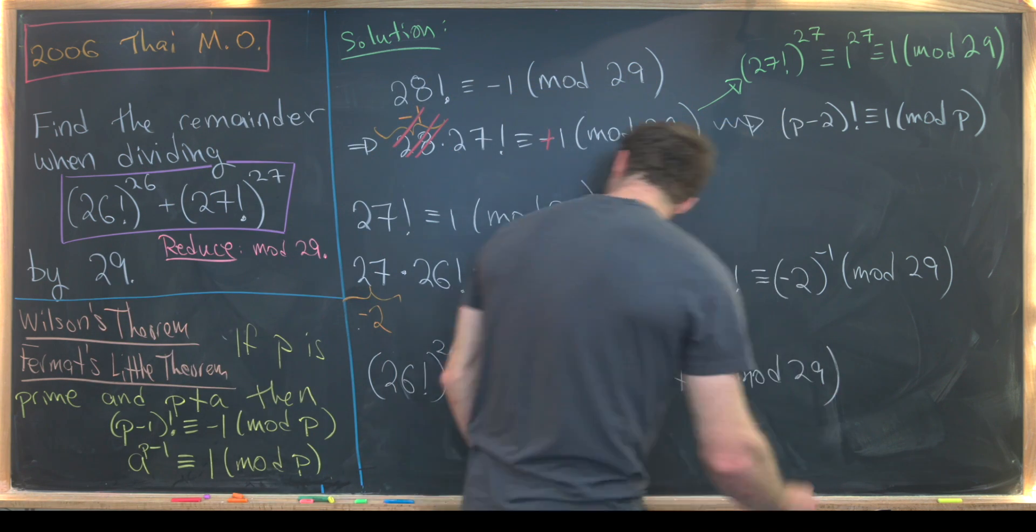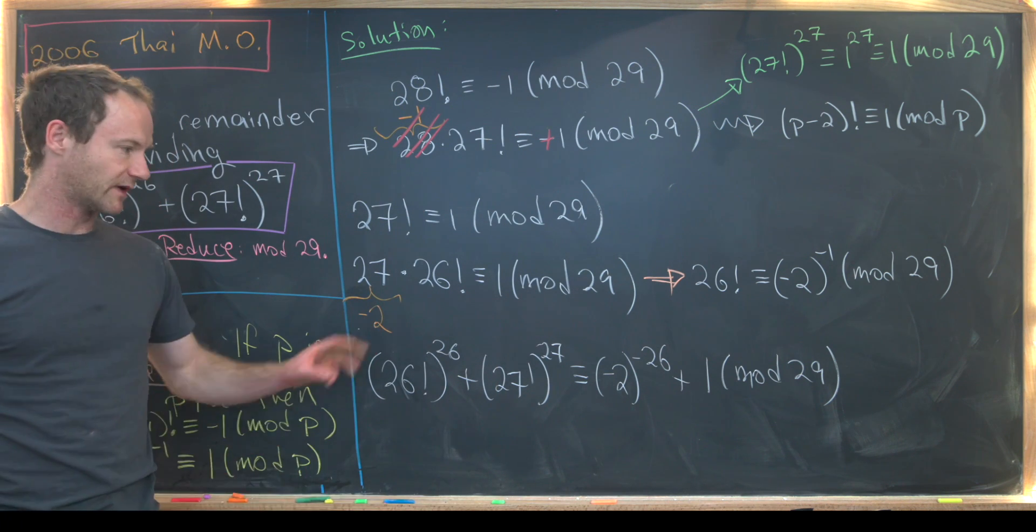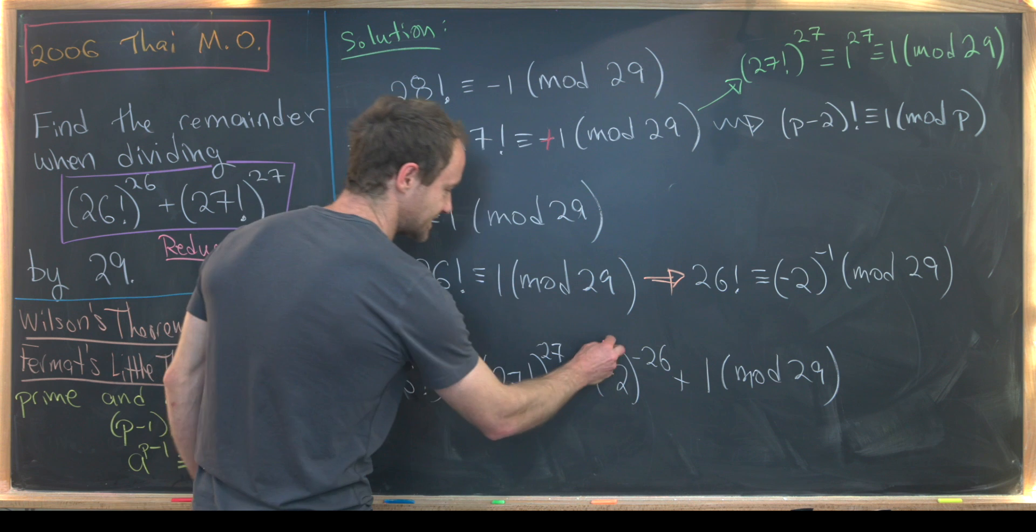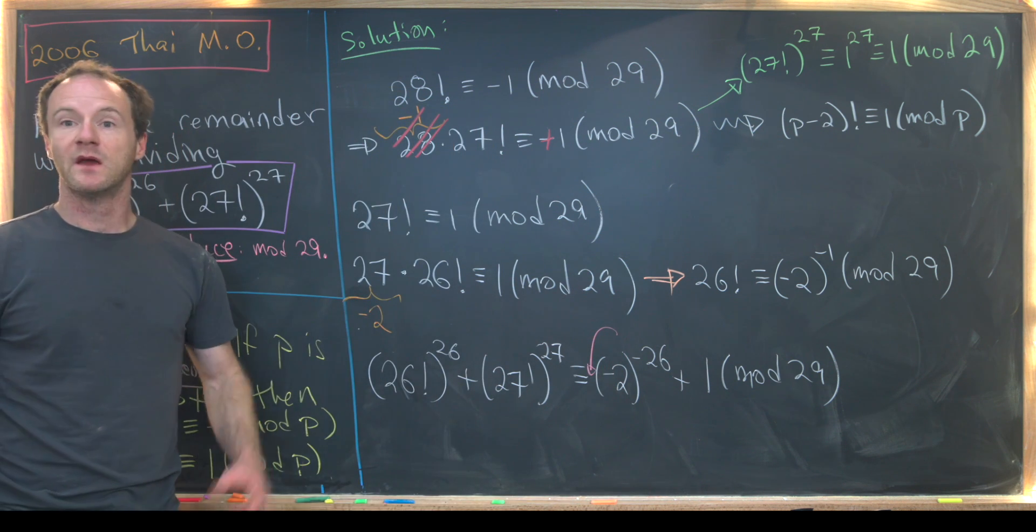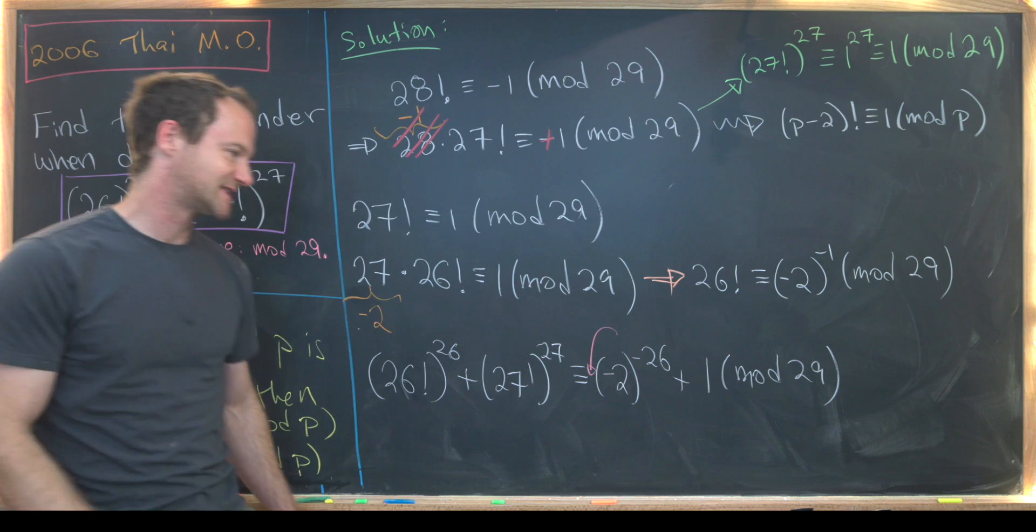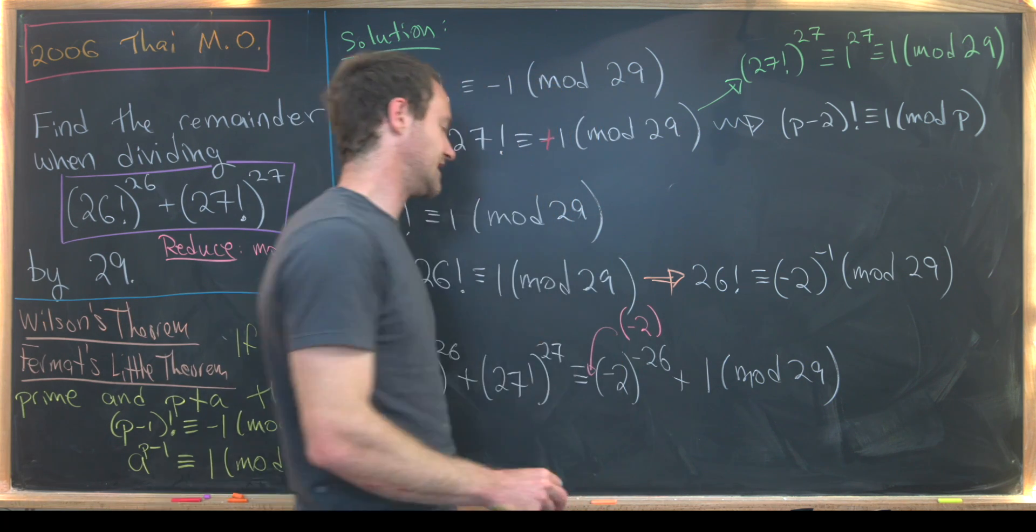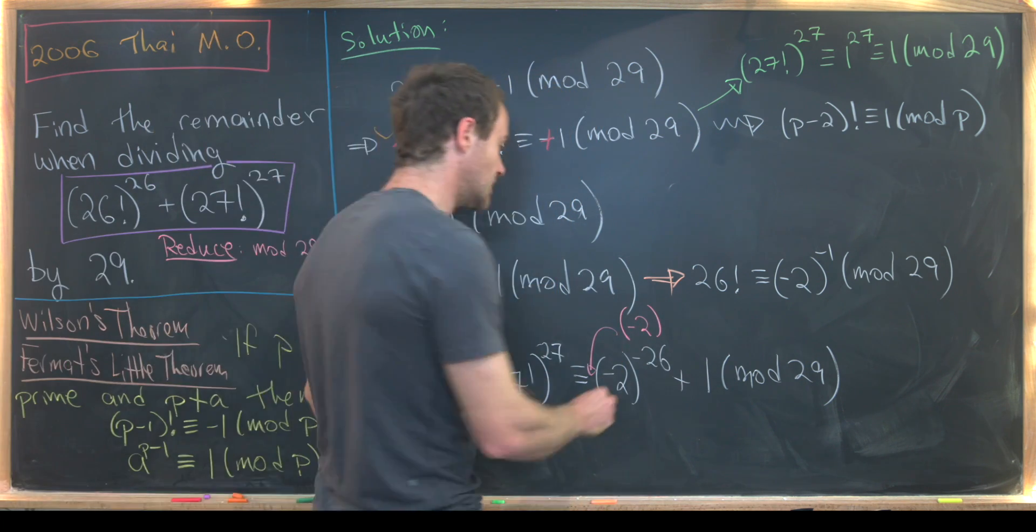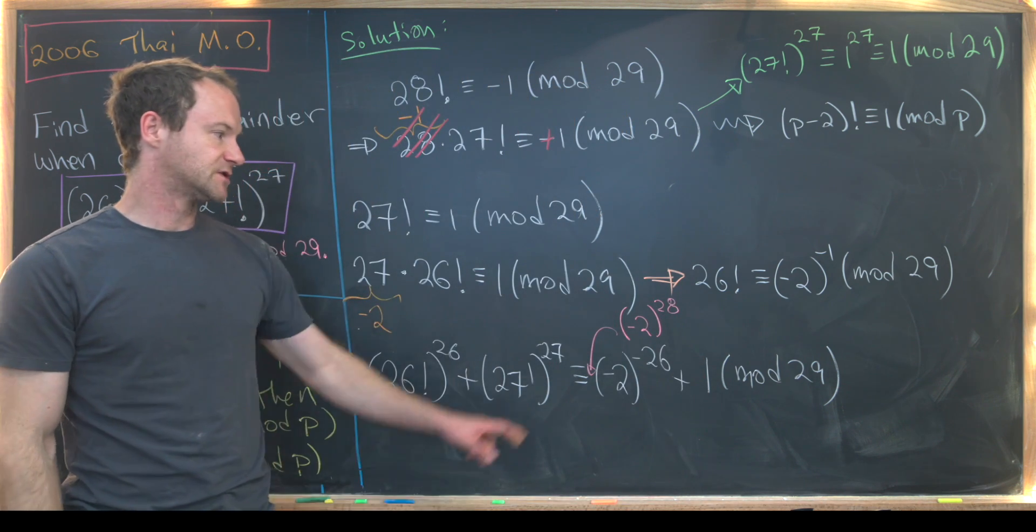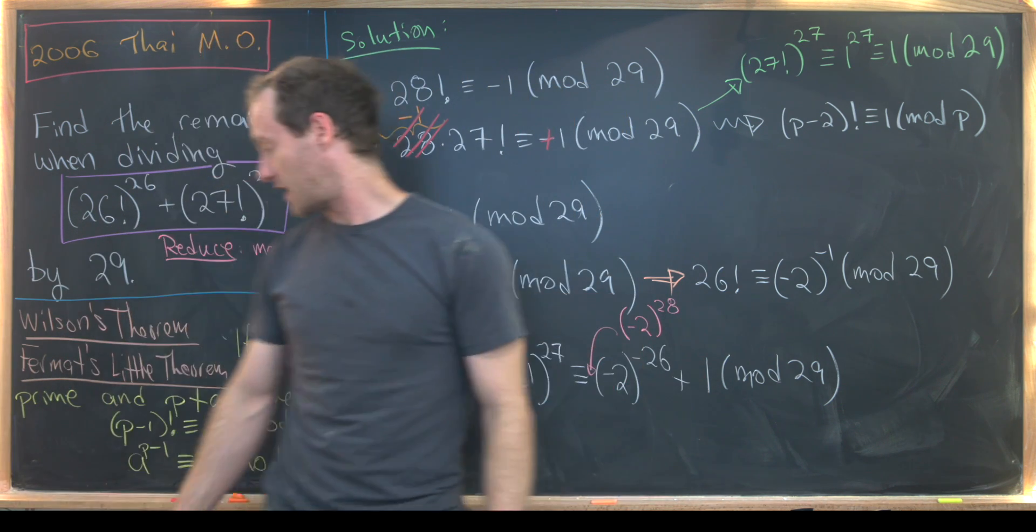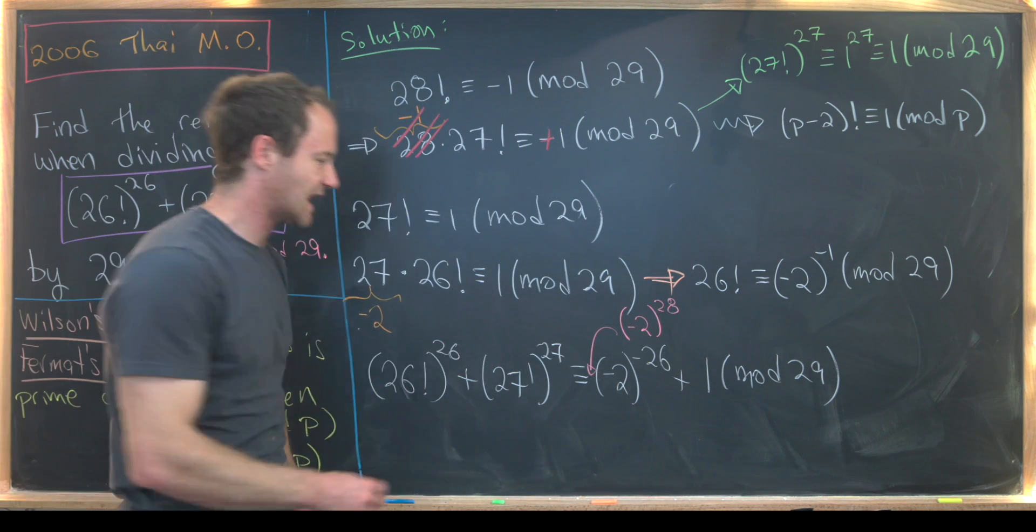So we've used Wilson's theorem a bit, but we haven't used Fermat's little theorem. Now we're ready to do that. We'll take this object right here and multiply it by 1, but we'll multiply it by a very special version of 1. The version of 1 that I want to multiply it by is minus 2 to the 29 minus 1, which is 28. So notice that's like a to the p minus 1 in this Fermat's little theorem setup. So let's see what that leaves us with.